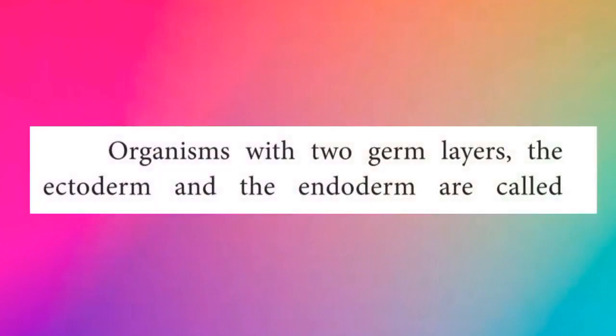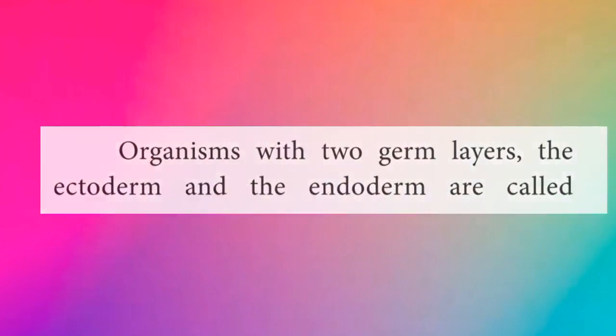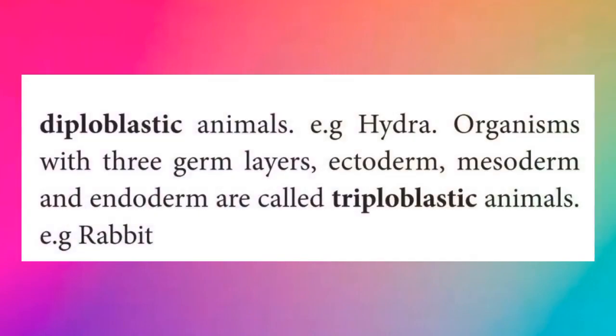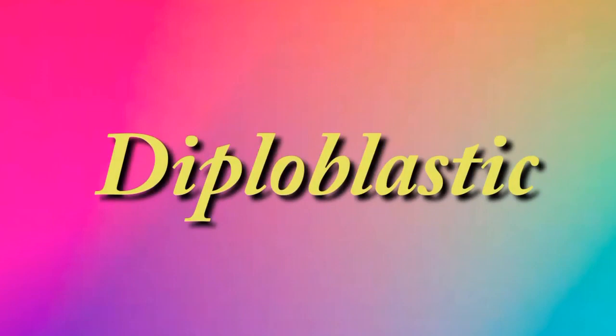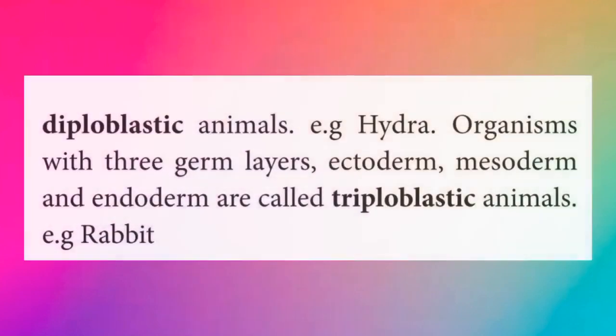Organisms with two germ layers — the ectoderm and the endoderm — are called diploblastic animals. Example: hydra. Organisms with three germ layers — ectoderm, mesoderm, and endoderm — are called triploblastic animals.